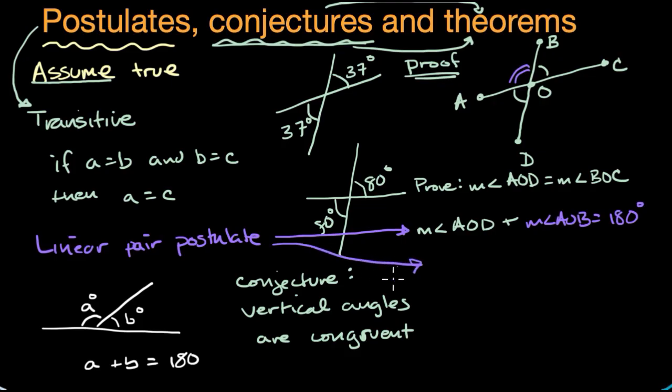The linear pair postulate can tell us that, and the linear pair postulate can also tell us that the measure of angle BOC plus the measure of angle AOB is also equal to 180 degrees. Because once again, these are in a linear pair, so to speak.